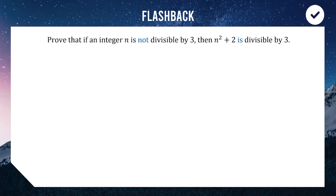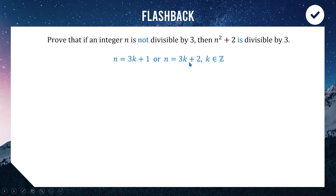For this one we want to write it as not divisible by three. There are two ways we can do that: it could be three times something plus one, or it could be three times something plus two. Either of these two expressions gives us an integer that is not divisible by three, given that k is an integer. So we have two cases: 3k plus one, or 3k plus two. We're going to have to work with both of these to show that n squared plus two gives us an answer divisible by three.